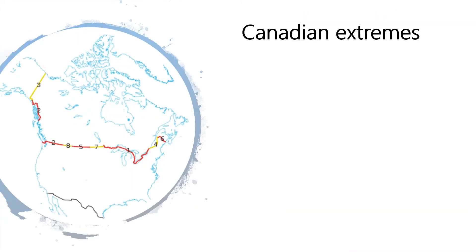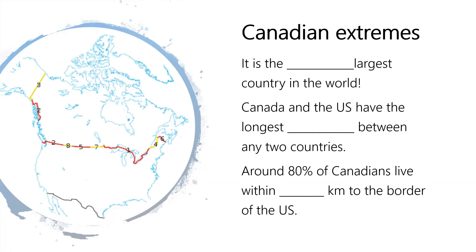Now take a look at these sentences and try to fill them in with missing words from the video. They are all about things Canada is special about. Canada is the second largest country in the world. Canada and the US have the longest border between any two countries. Around 80 percent of Canadians live within one hundred and sixty kilometers of the border with the US.